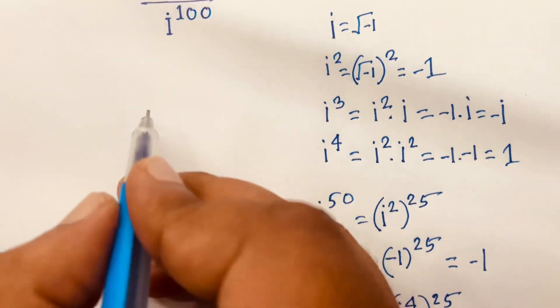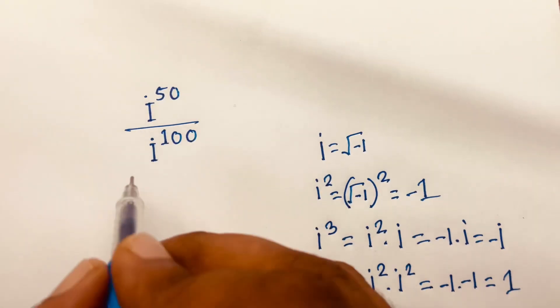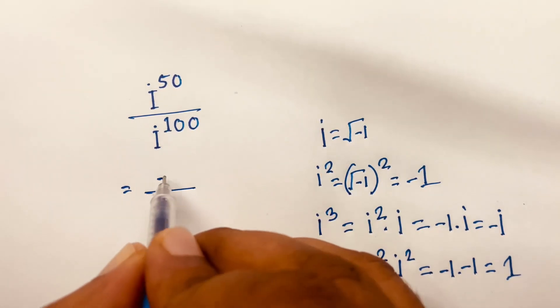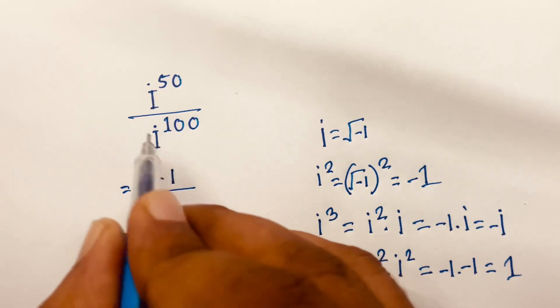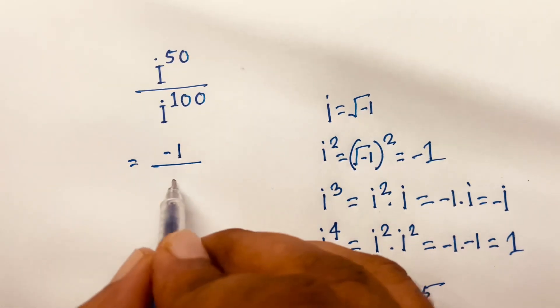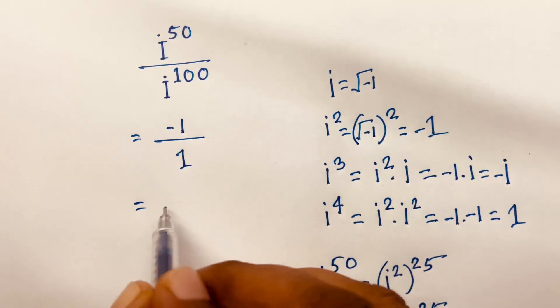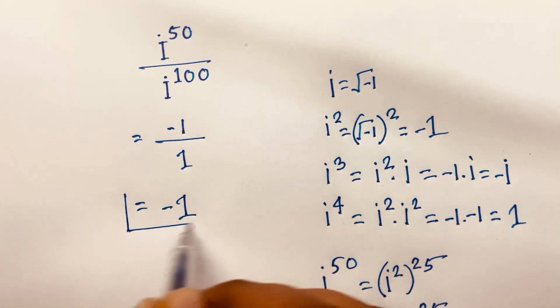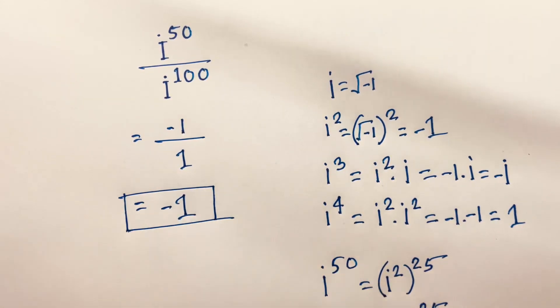So i to the power 50 equals -1, and i to the power 100 equals 1. Therefore the final answer is -1 divided by 1, which equals -1. This is our final answer.